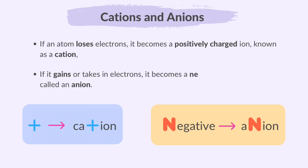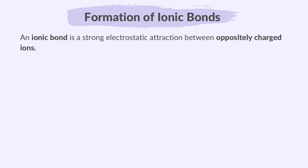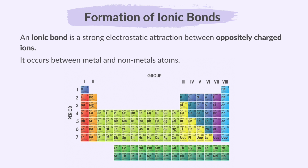And if it gains or takes in electrons, it becomes negatively charged, called an anion. So positive ions are known as cations, and negative ions are known as anions. An ionic bond is a strong electrostatic attraction between oppositely charged ions. It occurs between metal and non-metal atoms. We are expected to understand the formation of ionic bonds between elements from group 1 and group 7.